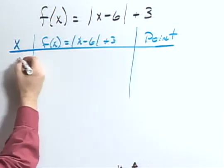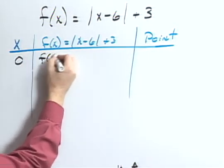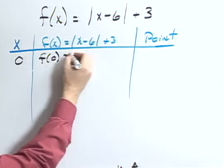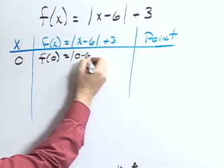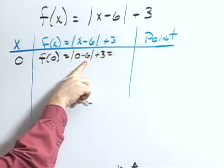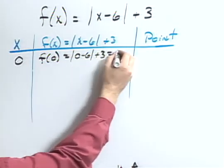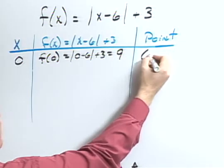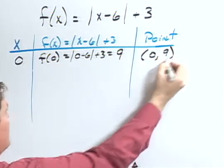So if I start at 0, f of 0 would be the absolute value of 0 minus 6 plus 3. That would be negative 6. The absolute value would be positive 6. Positive 6 plus 3 would be 9. So I would have the coordinate 0, 9.